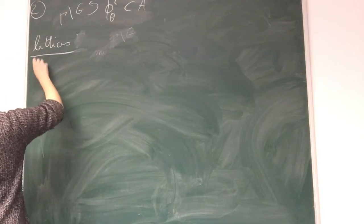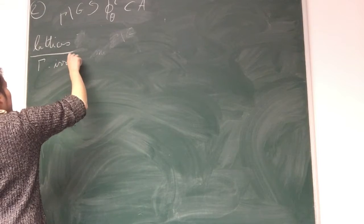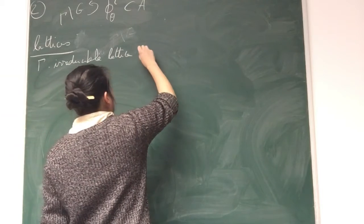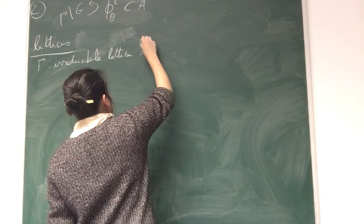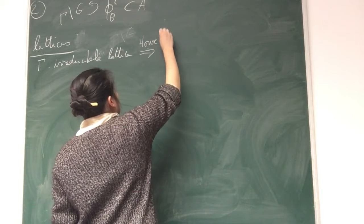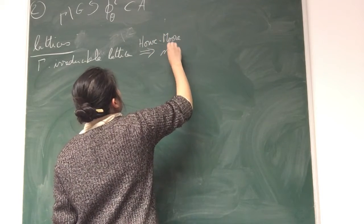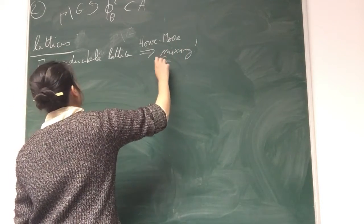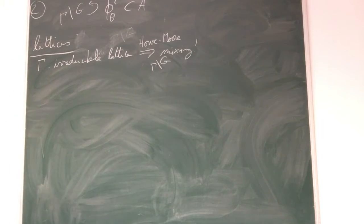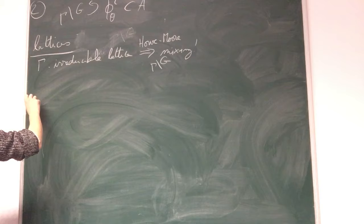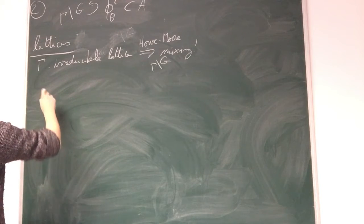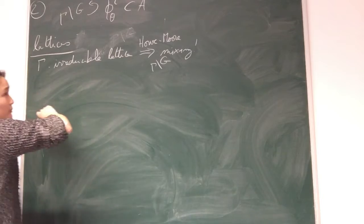Say gamma is a non-uniform lattice. And the non-wandering set is the whole G mod gamma.